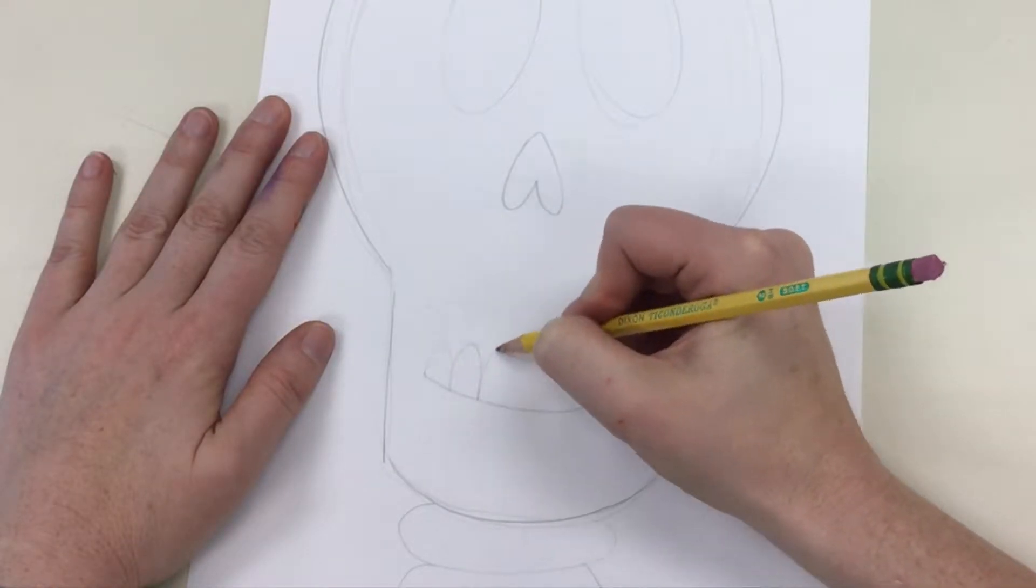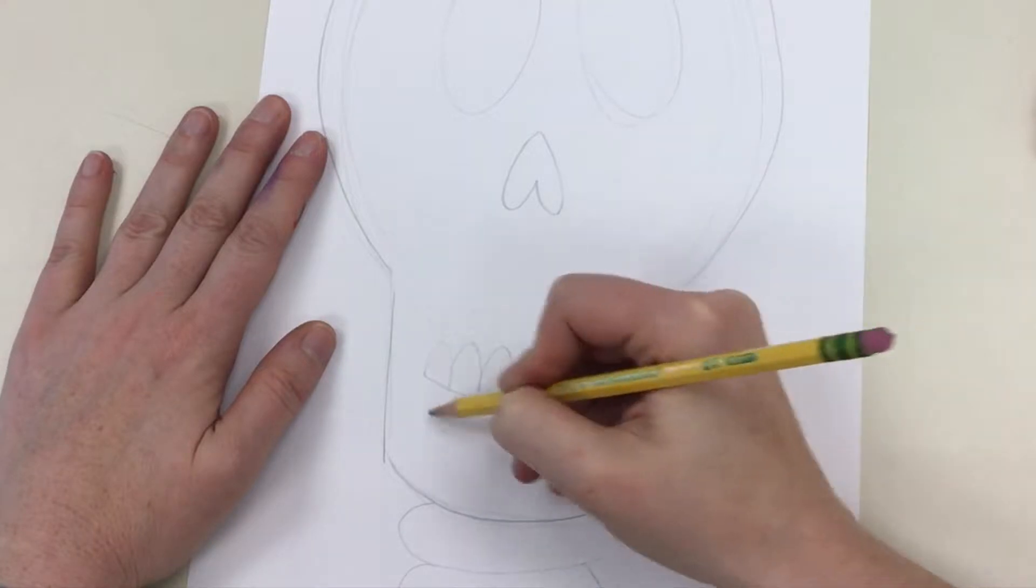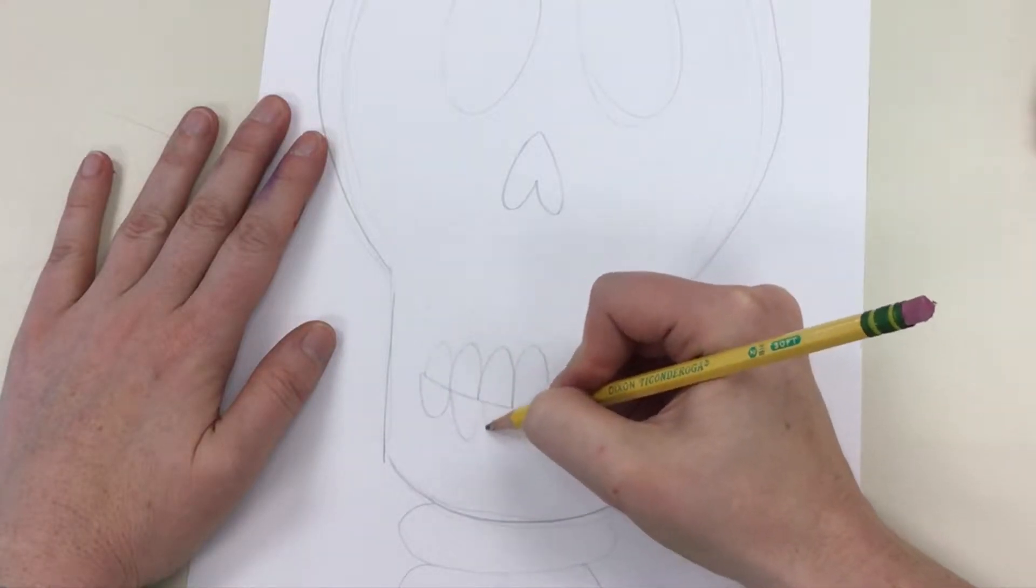For the teeth, I just added upside down U's and just kind of hopped along the line. And for the bottom side of the teeth, I just made U's that connected together.